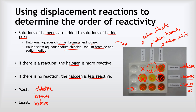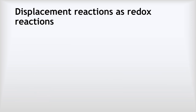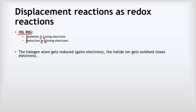We can also look at displacement reactions in terms of redox — reduction and oxidation reactions. The mnemonic OIL RIG helps us remember: Oxidation Is Losing electrons, Reduction Is Gaining electrons. In a displacement reaction, the halogen atom gets reduced (gains electrons) and is the more reactive halogen, while the halide ion gets oxidised (loses electrons) and is the less reactive halogen.